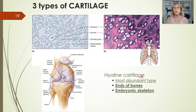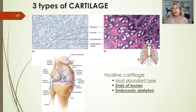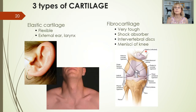Hyaline cartilage is the most abundant type, found at the ends of bones, and your embryonic skeleton was made out of it. Your ribs are made out of bone but they are attached to your breastbone, the sternum, by hyaline cartilage.